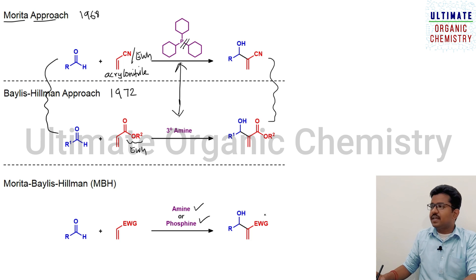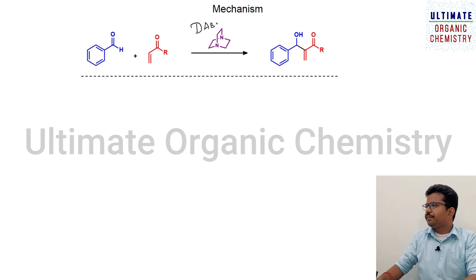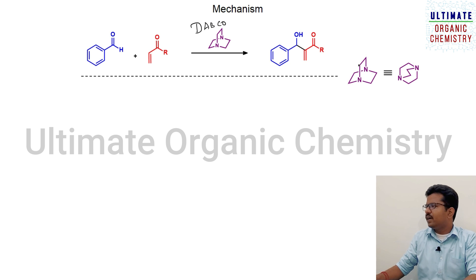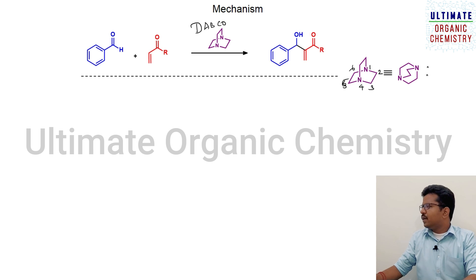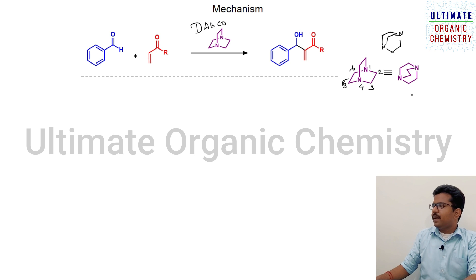Now let us discuss the mechanism of the reaction. Here they used DABCO as a catalyst. Let me explain the structure of DABCO. It is a bridged system where you have two carbon bridges between two nitrogen atoms, forming a six-membered ring. DABCO can be drawn in different ways; for understanding the mechanism, I am going to use a simplified structure.